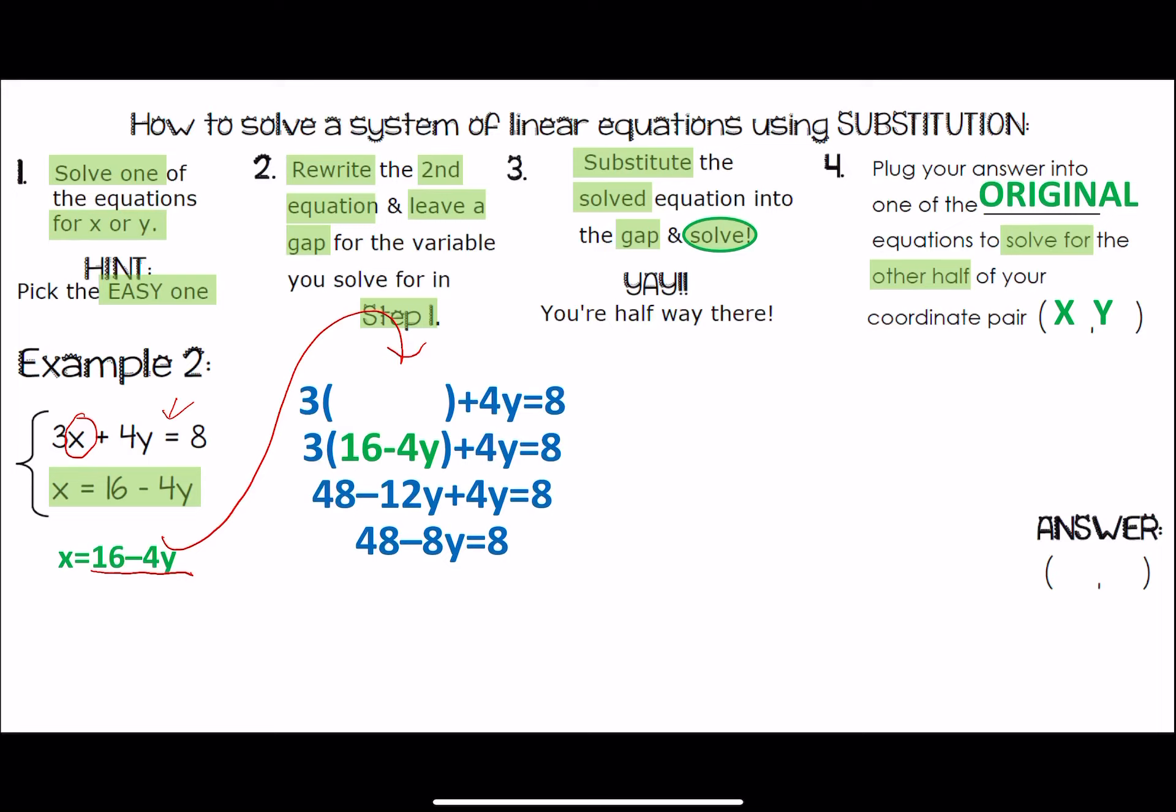There's no lighter variable to move. So, we're going to add or subtract. In this case, subtract 48. Divide by our negative 8. And you get y equals 5. So, you have half of your coordinate pair.